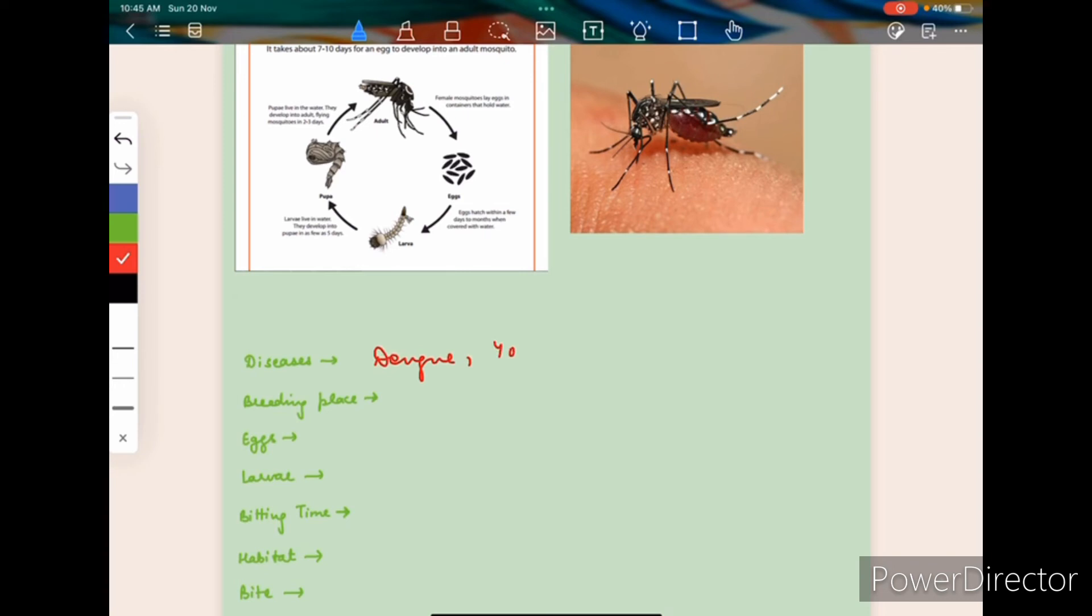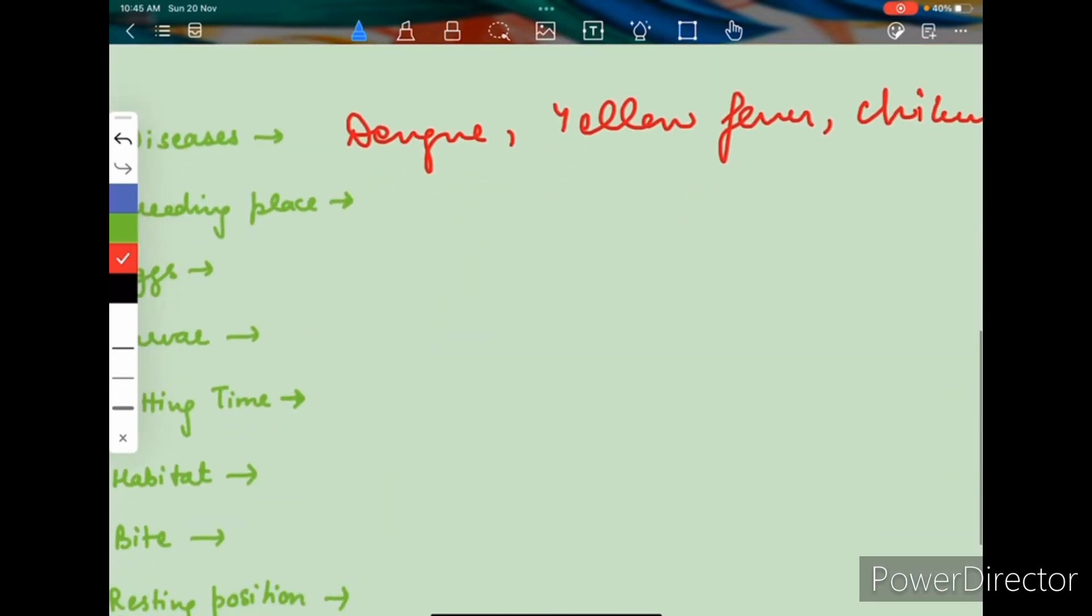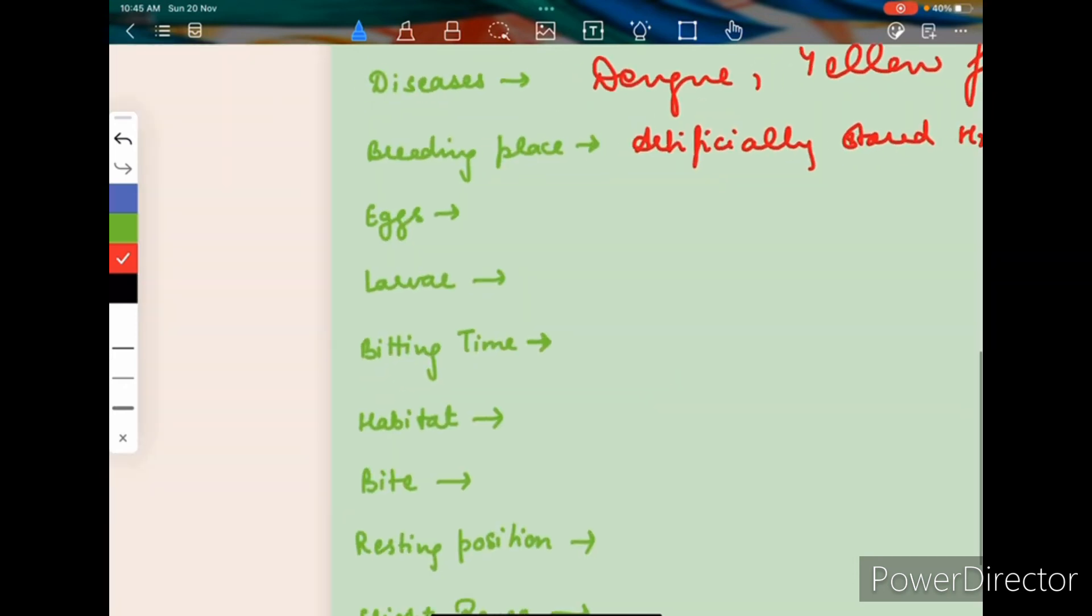Aedes mosquito causes dengue, yellow fever, chikungunya. The breeding places are artificially stored water in containers, artificially stored water like in coolers, plants, etc. Now here the eggs are single cigar-shaped, single cigar-shaped.